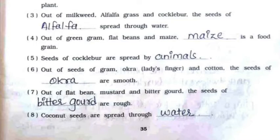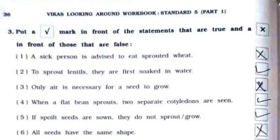Now we'll continue with question number three, that is true or false. First: a sick person is advised to eat sprouted wheat — it is false. Second: to sprout lentils they are first soaked in water — it is true. Third: only air is necessary for a seed to grow — it is false.